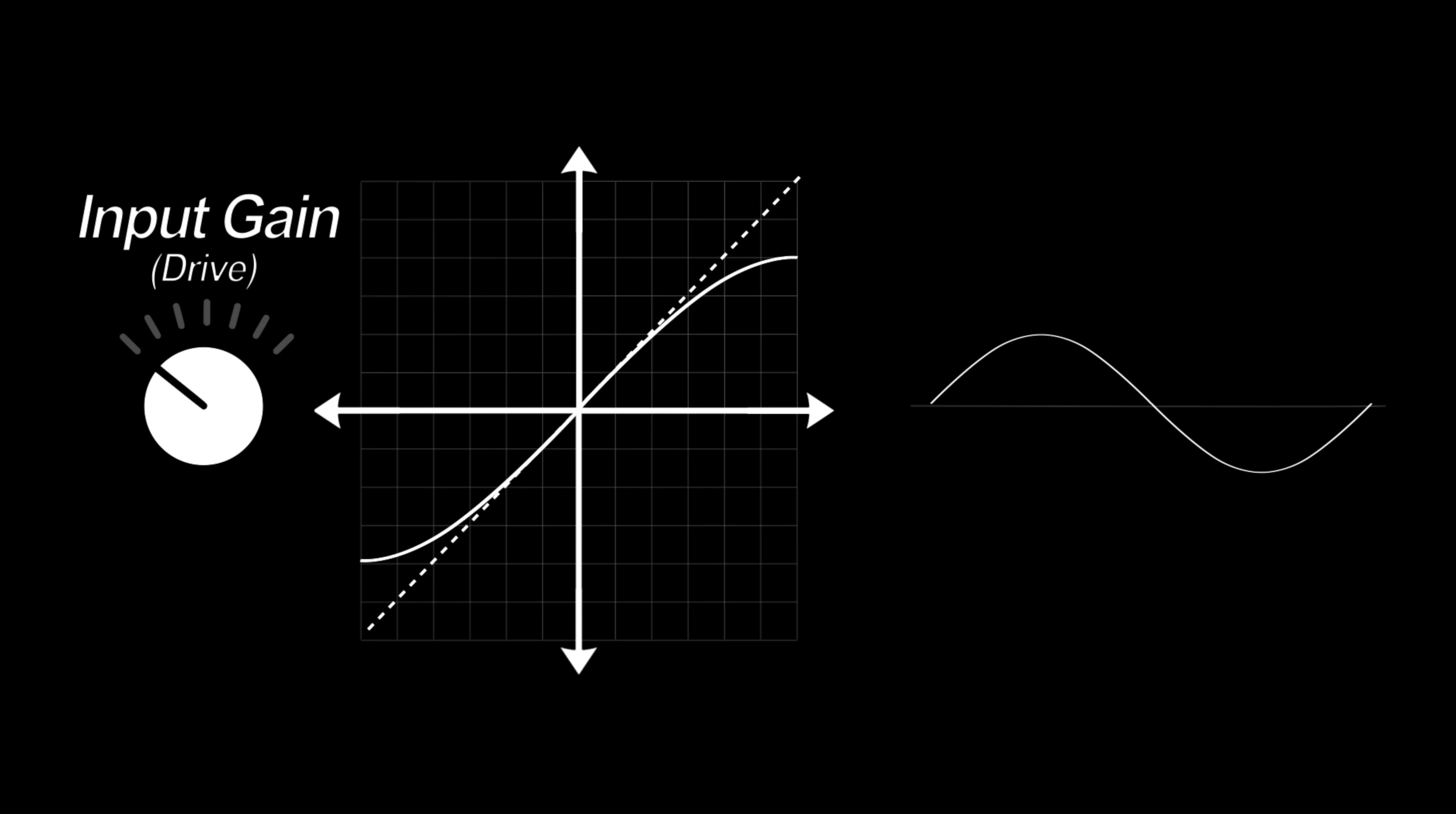If our input gain is too small, the wave never goes into the non-linear part of the curve and there's barely any change in the wave. If our input gain is too high, low levels of the wave contribute just as much to the distortion as high levels and we can't control it well.